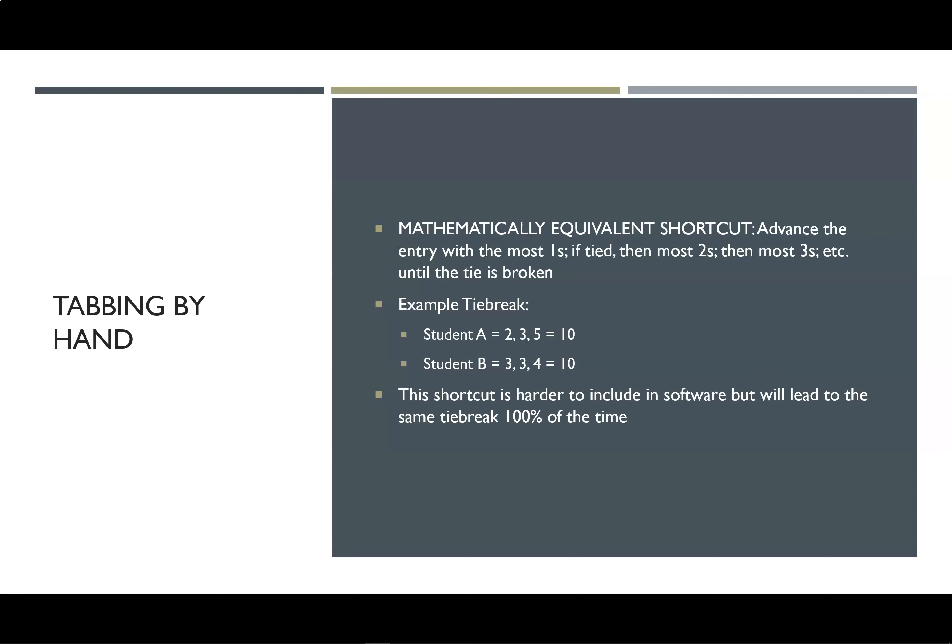If someone has a one and someone else doesn't, the person who has a one is going to advance. In this example, student A has a 2, 3, and 5; student B has a 3, 3, and 4. You can pause this video and verify with a calculator that student A should advance on a reciprocal tiebreaker. Our shortcut works here too: neither student has any ones, but student A has more twos than student B, so student A should advance. In software, we would just have it coded to do reciprocals because computers don't mind adding fractions, but this shortcut can save a tab team of high school students a lot of time and energy.